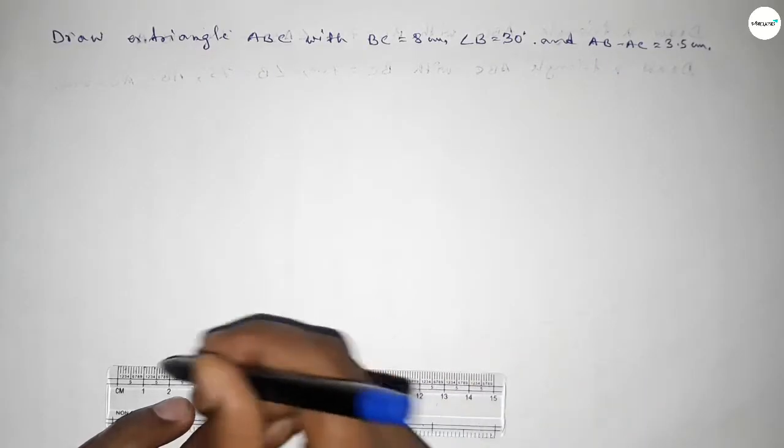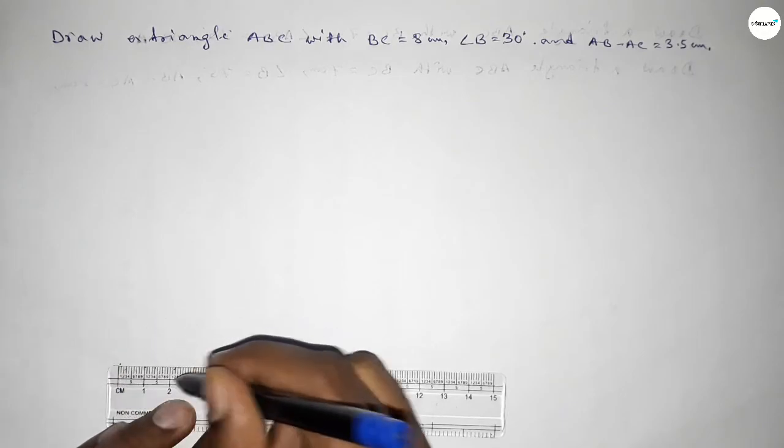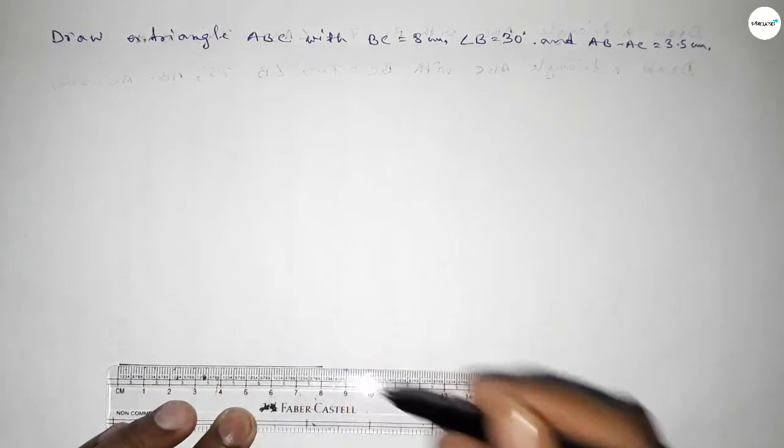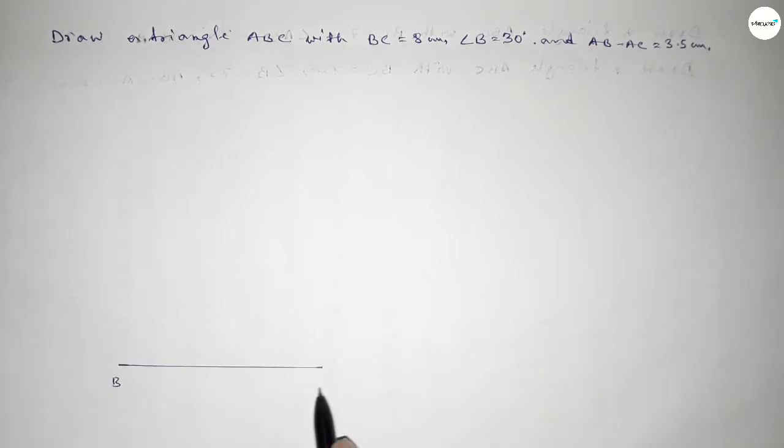First of all, we have to draw here a line of length 8 centimeter. So first drawing here a line of length 8 centimeter, taking here B point and here C point.